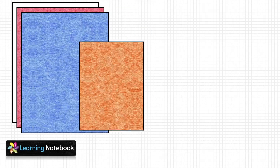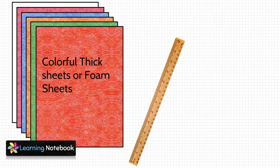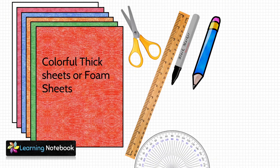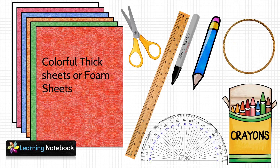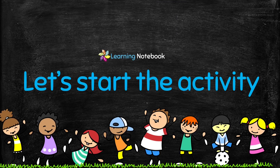For this activity we need a few colorful thick sheets, a ruler, a black marker pen, a pencil, a pair of scissors, a protractor, a box of crayons, and a bangle. Now let's start with the activity.